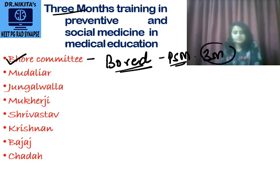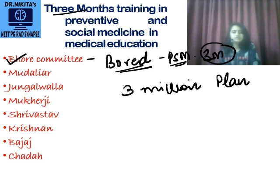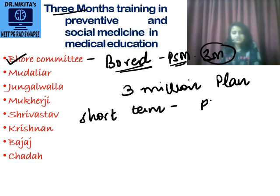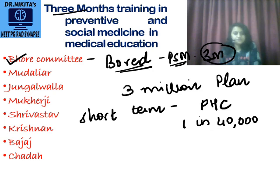Also remember that similar to this three months, the three million plan was introduced by the Bhore Committee — that is the long-term plan. The short-term plan was to establish PHCs for 1 in 40,000 population. These are important questions on the Bhore Committee.